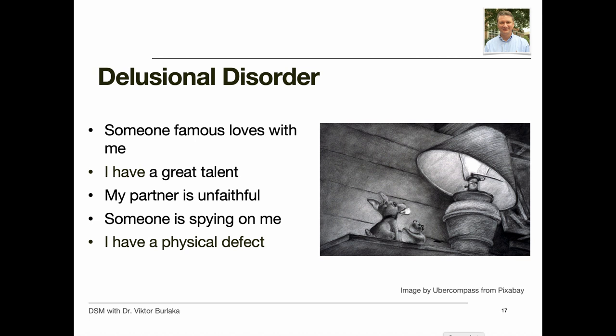People with delusional disorder often can continue to socialize and function quite normally apart from the subject of their delusion, and generally do not behave in an obviously odd or bizarre manner. Delusional disorder is more common in people who have family members with delusional disorder or schizophrenia, suggesting a genetic factor. It can also be triggered by stress. Alcohol and drug abuse might also contribute, and people who tend to be isolated — such as immigrants or those with poor sight and hearing — appear more vulnerable.